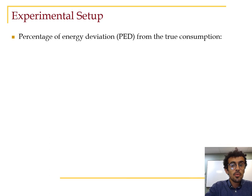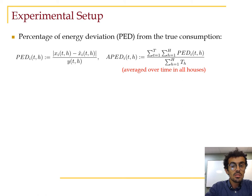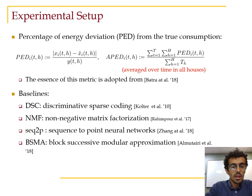We measure the performance using the percentage of energy deviation, PED, from the true consumption for each appliance using this equation. Then, we average over all time instances and houses using the other equation, and we compare to these baselines. DSC is a dictionary learning method. NMF is a non-negative matrix factorization-based method. Seq2p is a sequence to point neural network model. BSMA is a method based on submodular functions.